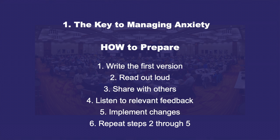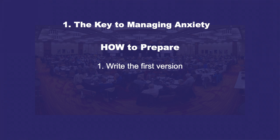If I just list all six in bright white and then explain each, it could be overwhelming for the audience. So what I instead do is I feature number one, talk about it, then gray it out.